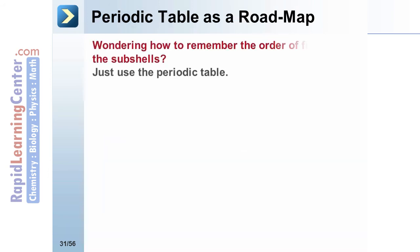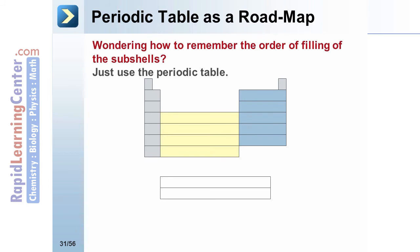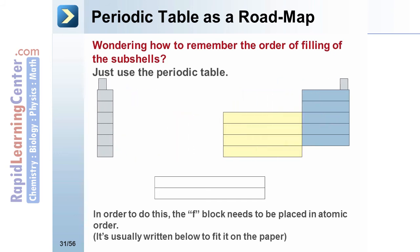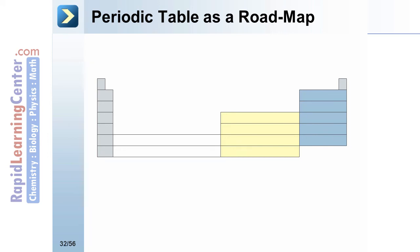To use the periodic table as a tool for filling order of subshells, the f block must be placed in numerical order of the elements. The f block is traditionally pulled out and placed on the bottom in order to fit standard paper. However, watch where it really belongs. Once it is moved in place, the periods, rows, of the periodic table can be labeled with the subshells.